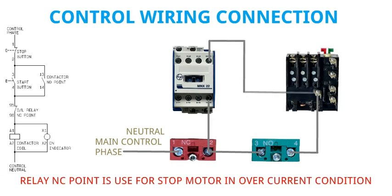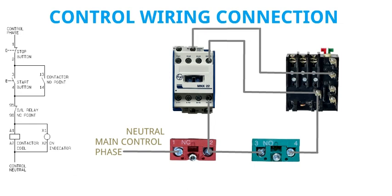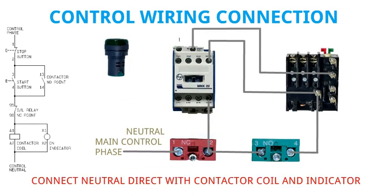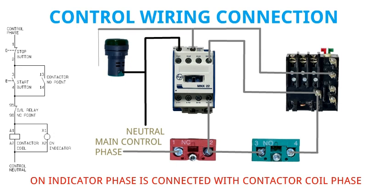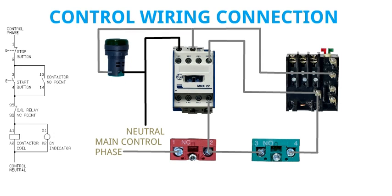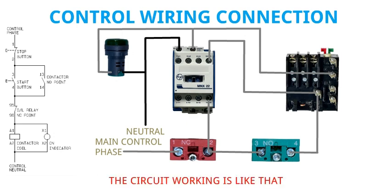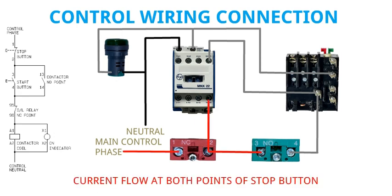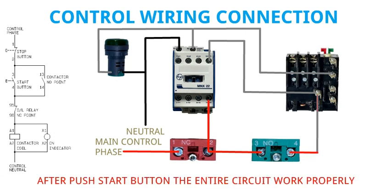The contactor NO point is used for holding purpose. The relay NC point is used to stop the motor in an overcurrent condition. Connect the neutral directly with the contactor coil and indicator. The on-indicator phase is connected with the contactor coil phase. The wiring circuit is now complete. The circuit works as follows: when we switch on the control supply, current flows at both points of the stop button. After pressing the start button, the entire circuit works properly.